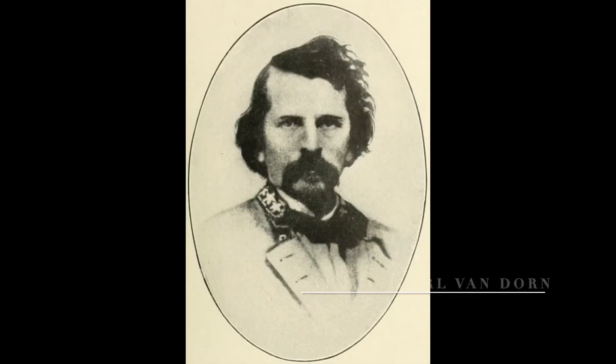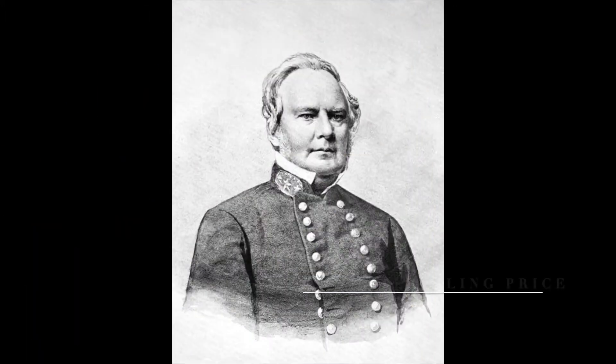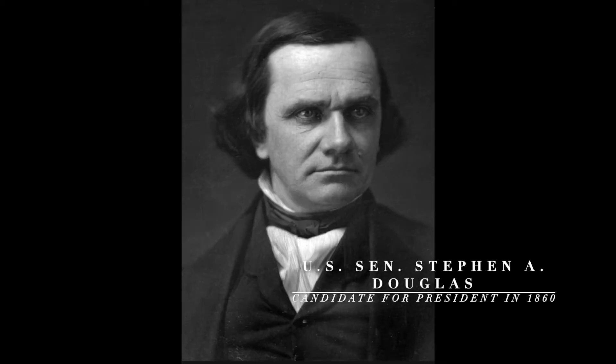On the Confederate side, Earl Van Dorn was the commander of the Army of the West. A great-nephew of Andrew Jackson, he fought with distinction during the Mexican-American War and was well-known as a Western theater commander throughout the Civil War. One of Van Dorn's major generals was Sterling Price, who actually served as governor of Missouri in the 1850s. Initially a strong supporter of the Union, he actually backed Stephen Douglas for president in 1860 against Abraham Lincoln.